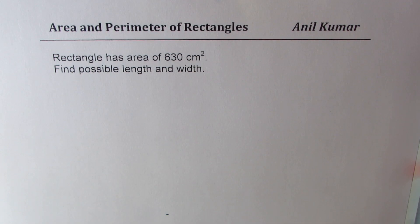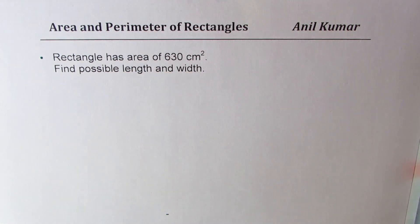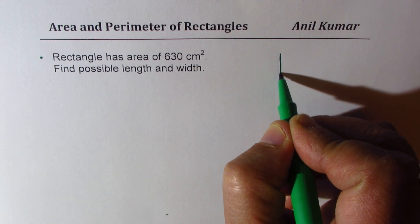I'm Anil Kumar. Let me thank all my viewers and subscribers for taking interest in my videos and posting excellent questions. Here is another example, a question posted by my friend on area and perimeter. The question here is: rectangle has area of 630 cm², find possible length and width. Let us see how to solve this question.